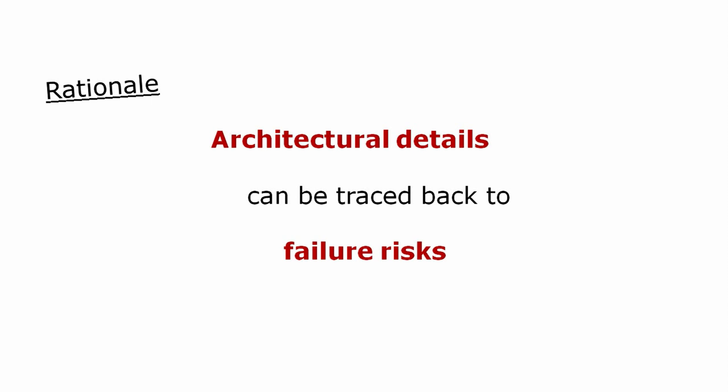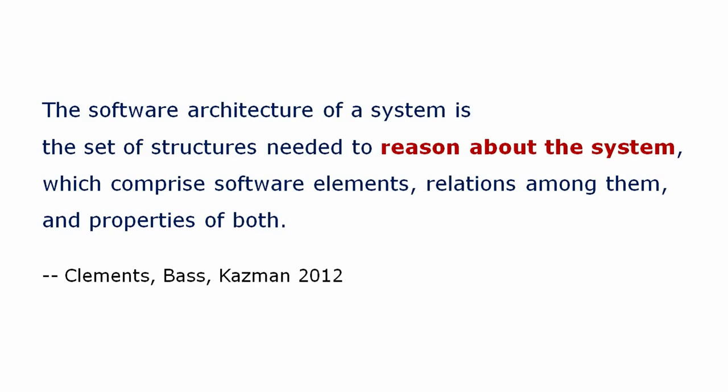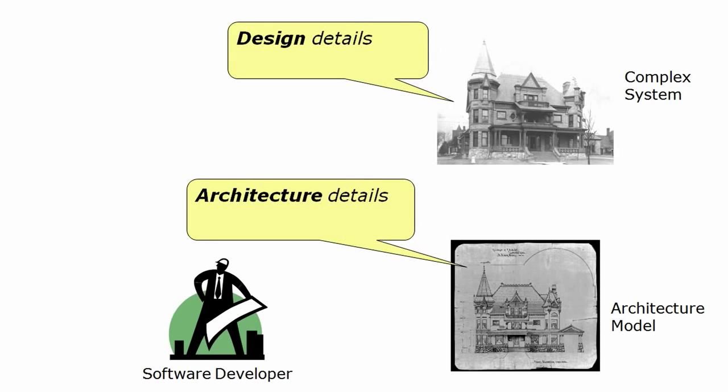A design detail is architectural if and only if it can be traced back to avoiding a failure risk. That is how we decide if a design detail is architectural. Now let's return to the question: What is software architecture and how does it relate to design? Here's the definition of software architecture again, and this time it should make a lot more sense. The software architecture of a system is a set of structures needed to reason about the system, which comprise software elements, relations among them, and properties of both. A set of structures here just means models, models that you use to reason about the system. When you build models to reason through your risks, you are excluding design details that are irrelevant to the risks you identified and including architectural details that are essential to understanding your system's success.